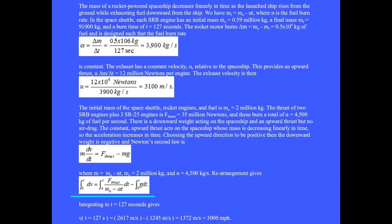Rearrangements gives this integration. The first integral just gives v. The middle integral gives 2600 meters per second. The third integral is just g times t and we get minus 1245 meters per second. The sum of these two numbers is 1372 meters per second which is 3000 miles per hour.